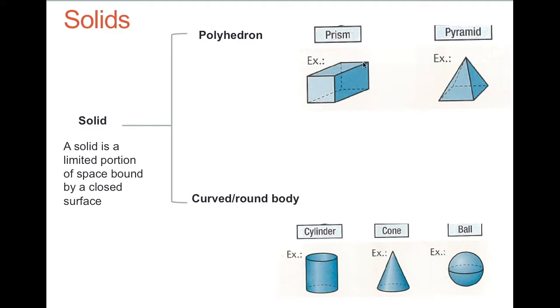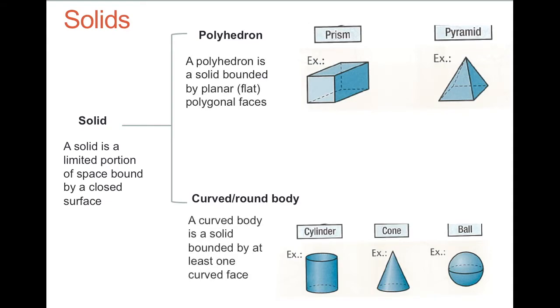Here are some examples of polyhedron, and here are some examples of curved round bodies. This is what we're going to be looking at in terms of finding area. Remember that polyhedron are solid with plain faces, flat, whereas a curved round body has some kind of circular shape to it.